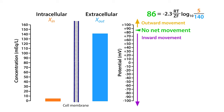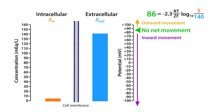At these concentrations, the concentration gradient favors the movement of ions into the cell. This occurs when the potential is more negative than plus 86 millivolts. However, if we made the electrical potential more positive, we could force the ions to move out of the cell against its concentration gradient. We'll talk more about the relevance of this in another lesson.